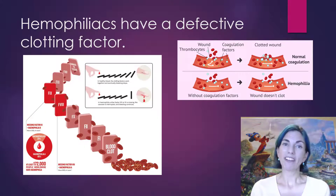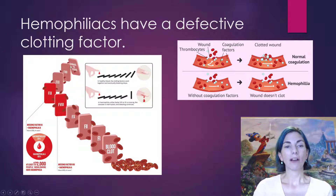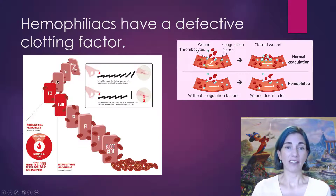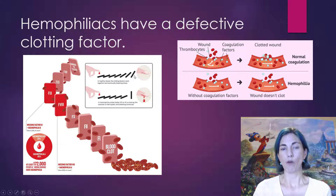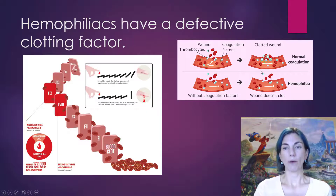Hemophiliacs have a defective clotting factor, which is part of the coagulation cascade. Somewhere in the cascade one factor is defective, and it prevents the domino effect from reaching the end. In a normal functioning cascade, all the dominoes fall to produce a clot; when one domino is removed, you never reach your end product. Hemophilia means coagulation takes much longer than normal.